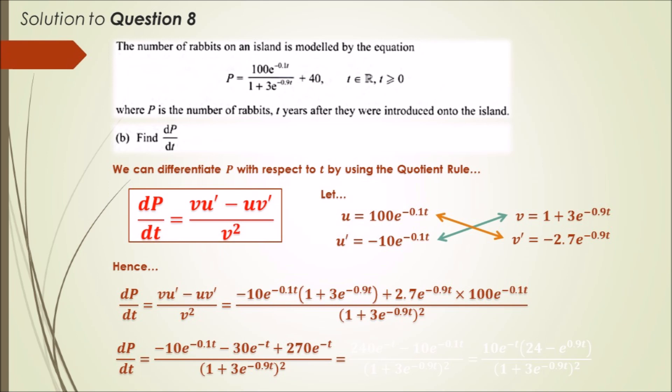Remember minus 0.1t times minus 0.9t at the power—minus 0.1 plus minus 0.9 is just minus 1, so minus t. Likewise, plus 270e^(-t) for the same reason. Minus 30 plus 270 gives 240e^(-t), minus 10e^(-0.1t). Lastly, we can factorize 10e^(-0.1t) out and we should get the following. Voila, that's it.